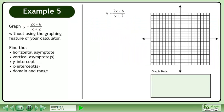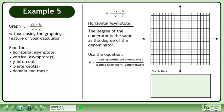Set up the graph and create a green box to store graph data. Begin by finding the horizontal asymptote. The degree of the numerator is the same as the degree of the denominator. Use the equation y equals the leading coefficient of the numerator over the leading coefficient of the denominator to find the horizontal asymptote.